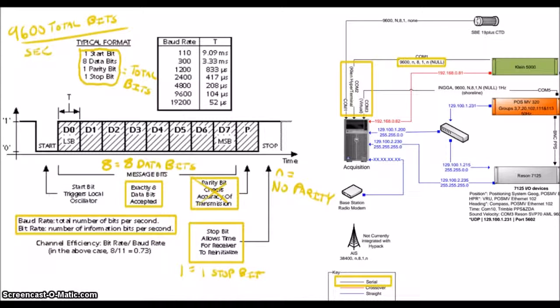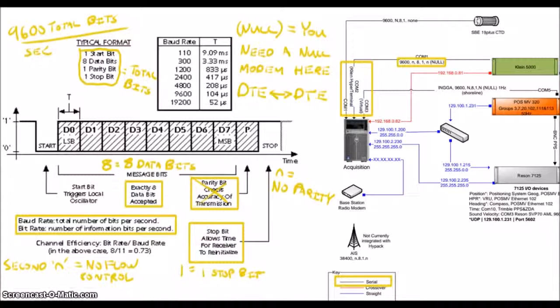A flow control of N or none just indicates that you aren't using flow control. And finally, the null you see here indicates a null modem, which in this case is for connecting PAWS and Klein, which I believe are both DCEs or at least act like it.